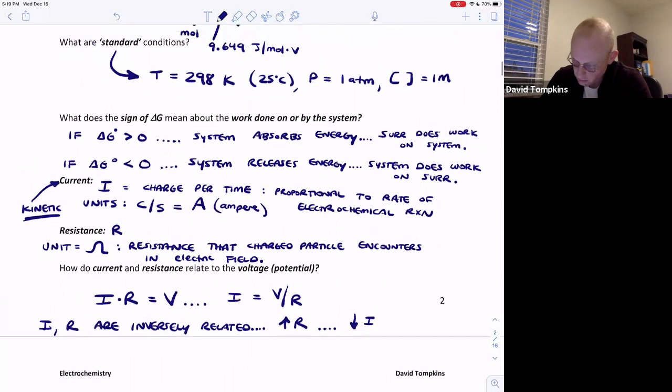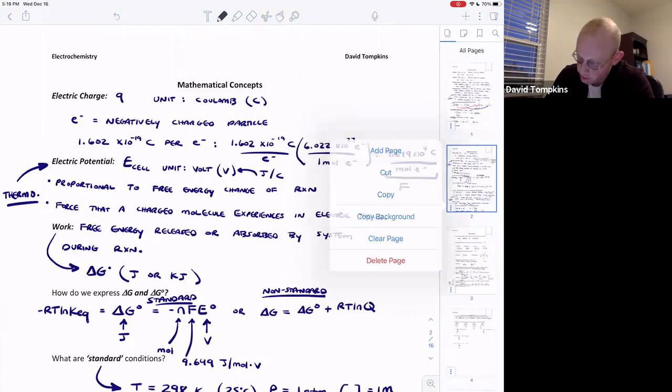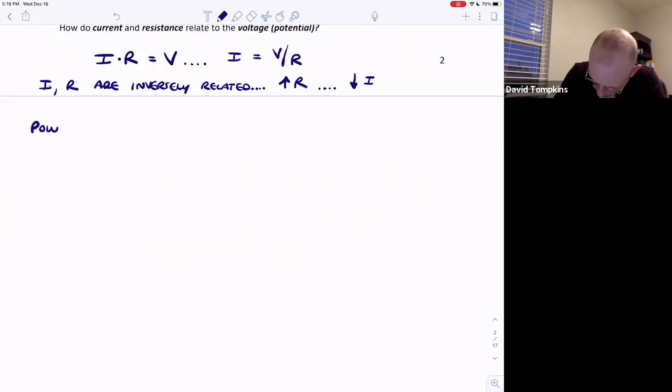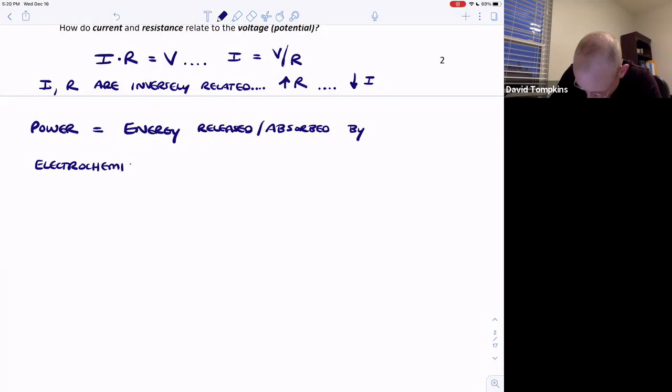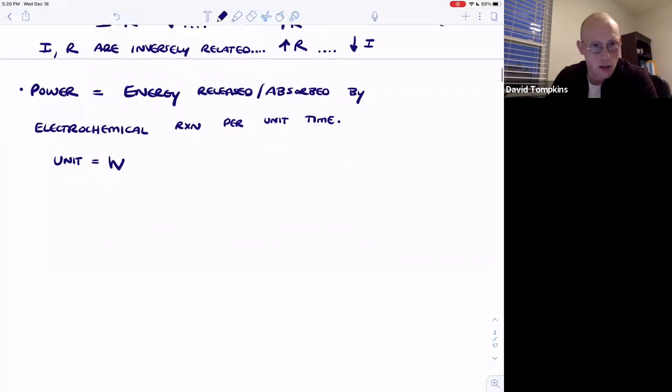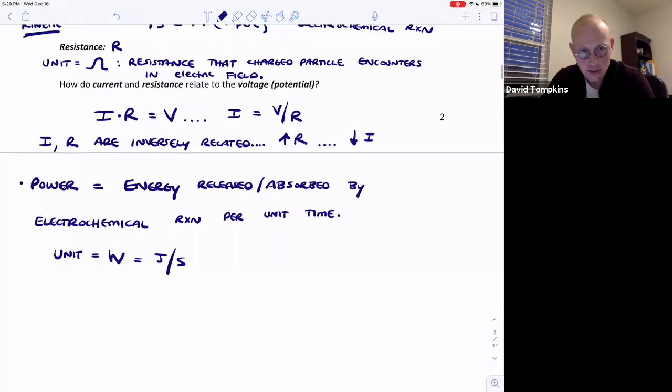One more mathematical parameter that you should be able to understand is the power. This is the energy that's transferred, either released or absorbed by an electrochemical reaction per unit time. This power has a unit known as a watt, capital W. A watt is also known as a joule per second. This tells us about the energy expenditure per unit time and is thus related to the thermodynamics of the reaction.